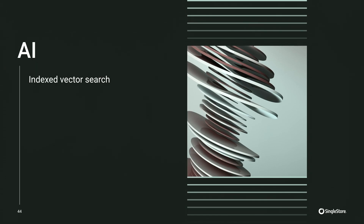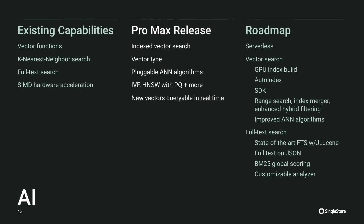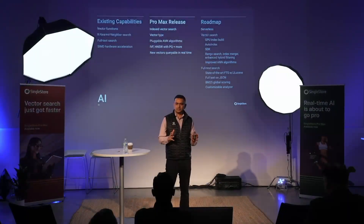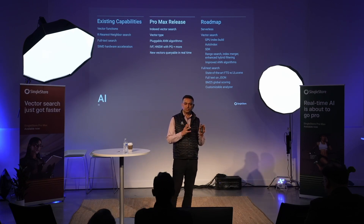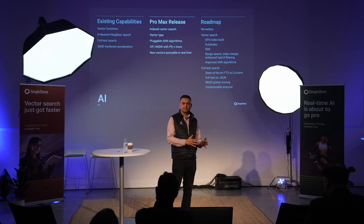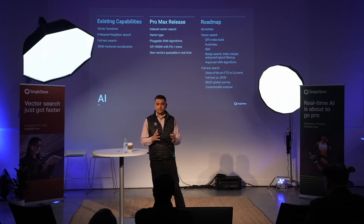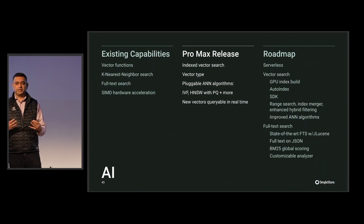Let's get into the AI part and what exactly we are delivering. Our journey with vectors didn't start in the last 12 months — we've had vector support since 2018. We had KNN search, we have vector functions, and people are in production on SingleStore using vector-related capabilities. But in this particular release, we are taking a quantum leap by adding a lot of ANN search-related capability.